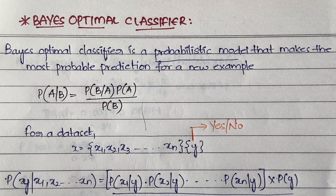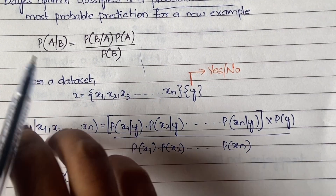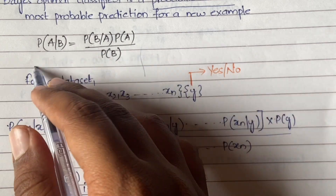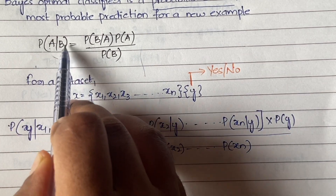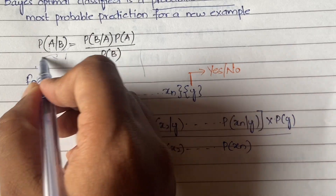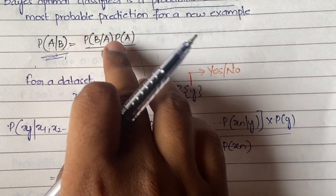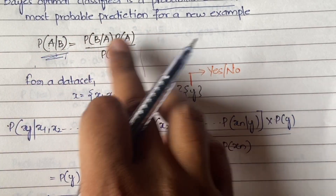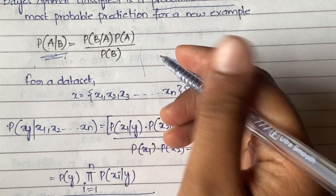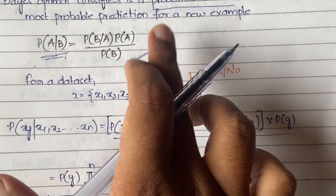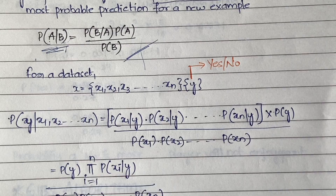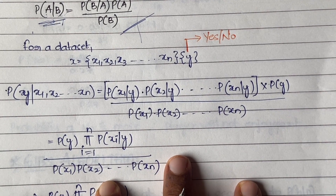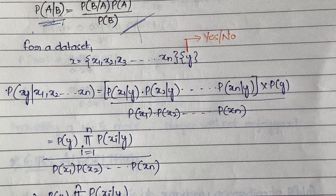So you know what Bayes theorem means: P(A|B) — you need to find out the probability of A when the probability of B is already given. That is what P(A|B) means: it equals P(B|A) times P(A) divided by P(B). Based on this theorem, we are going to apply it and do an example for Bayes Optimal Classifier classification.